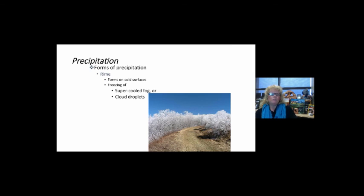Rime is probably one of the prettiest forms of frozen precipitation. This forms on cold surfaces like trees and sometimes power lines. This image of rime on trees is super-cooled fog or cloud droplets that have accreted onto a hard surface and frozen. Rime is absolutely beautiful.